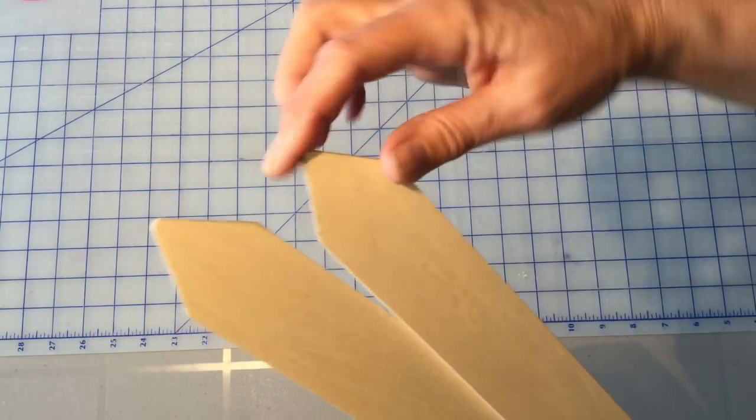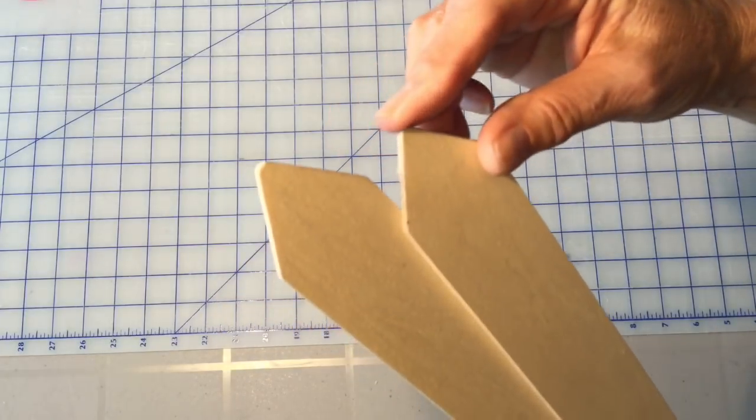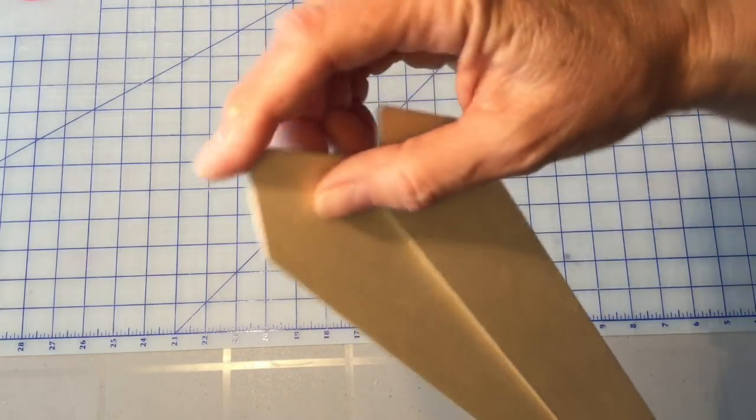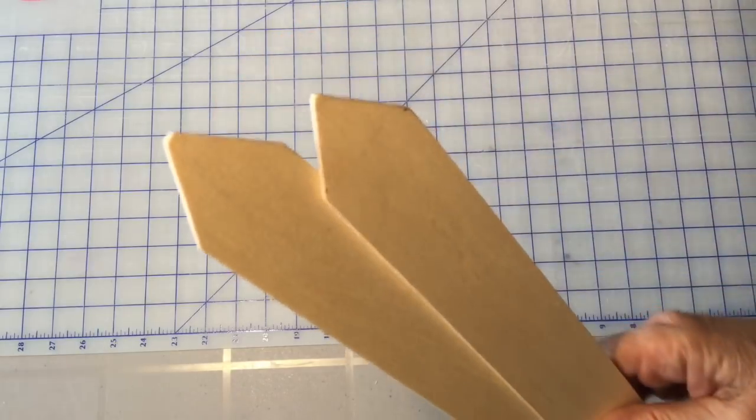And there's my two shed sticks. This one I've made with a little bit more of a sharper point. And this one I made just slightly more rounded, just so I can have two different versions.